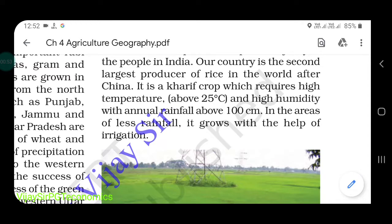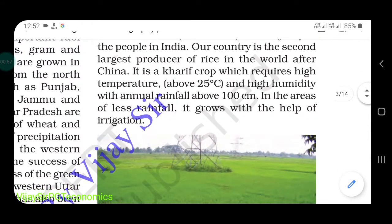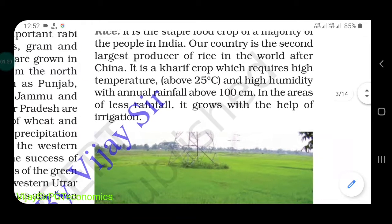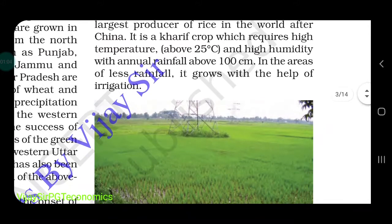Rice is a kharif crop which requires high temperature around 25 degrees Celsius and high humidity, with annual rainfall above 100 centimeters. In areas of less rainfall, it grows with the help of irrigation. In some areas where there is no rainfall, it is grown using irrigation facilities.